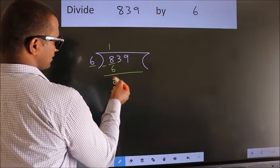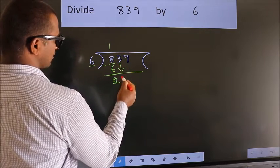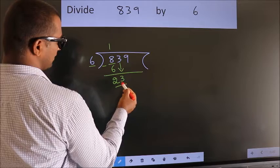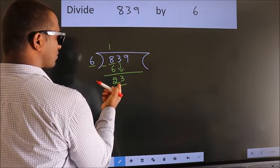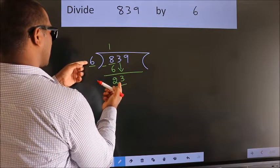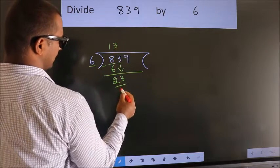After this, bring down the next number, so 3 down, so 23. A number close to 23 in the 6 table is 6 threes 18.